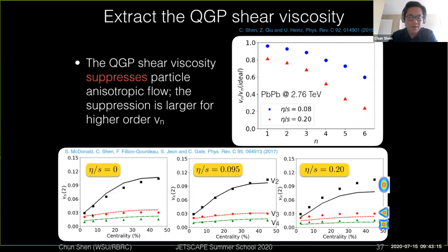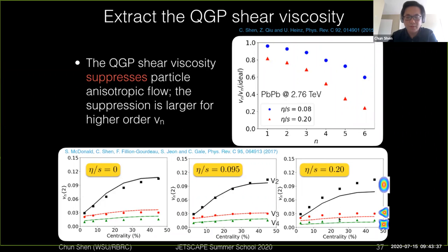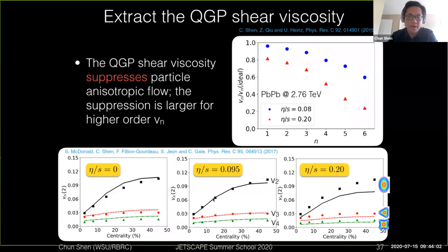We can now compare V2, V3, and V4 measurements from experiment to hydrodynamic simulations with different values of shear viscosity. Ideal hydro gives the dashed curve, while more viscous hydrodynamics underestimates the experimental data. By fine-tuning the shear viscosity to get the best comparison with data for all orders of VNs, the best-fit value here is approximately 0.1 or 0.095. This approach allows us to read off the shear viscosity directly from model-to-data comparisons of the VN coefficients.